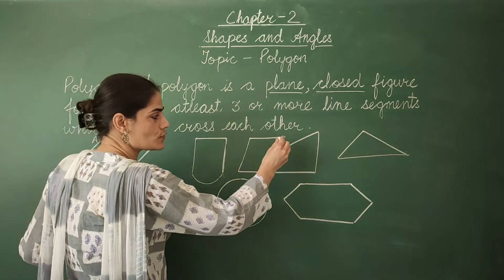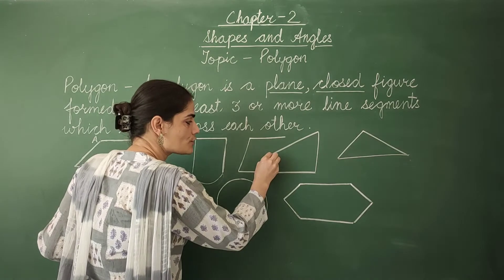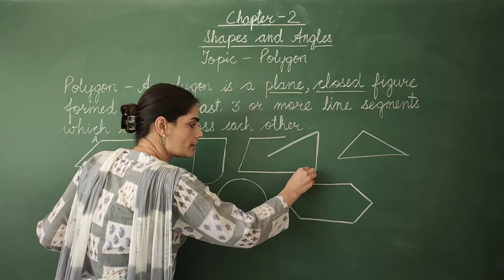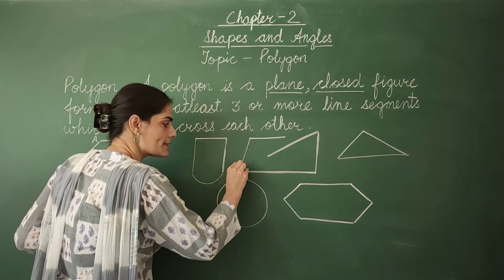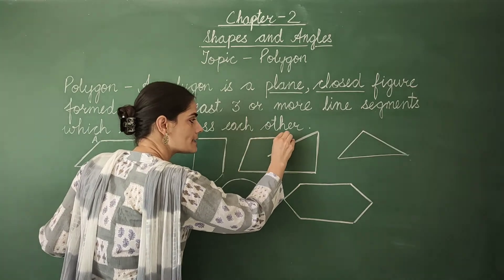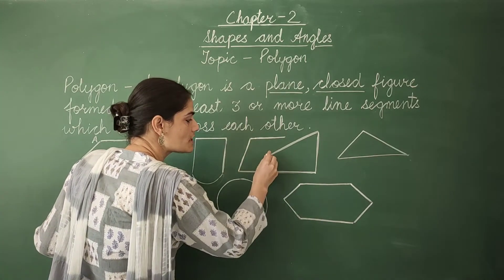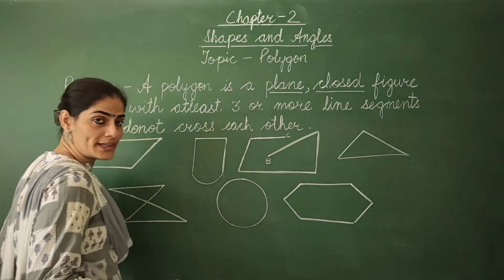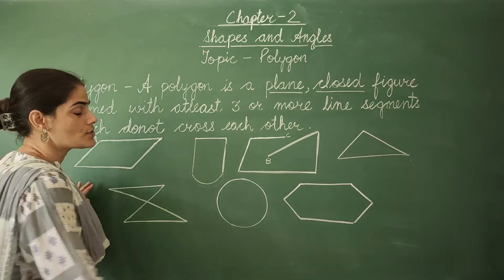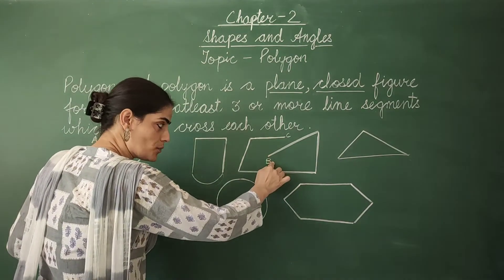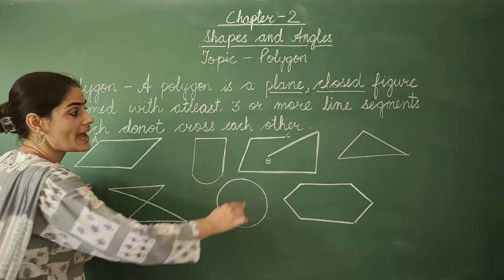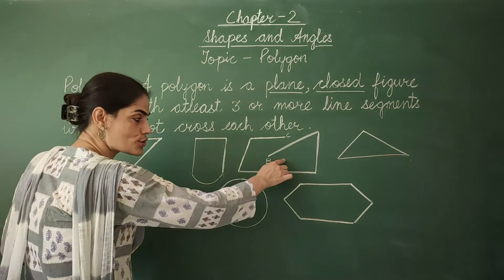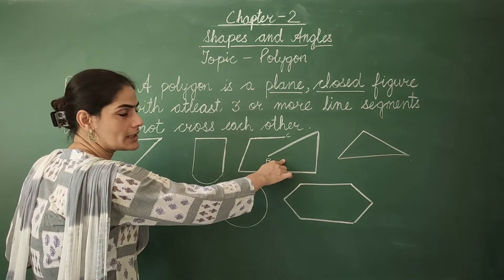Now look at this figure. I started drawing it from this point, drew it this way, then this way, came on to this side, and my figure ended here. So this was the beginning point — let's call it B — and this was the ending point — let's name it C. So here the starting and ending points are different, and there is a gap, which shows that it is not a closed figure. So we cannot consider it as a polygon.